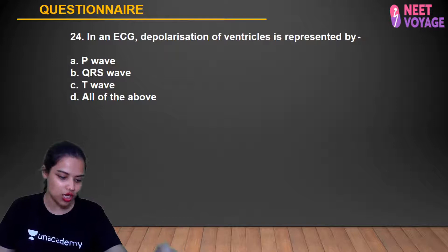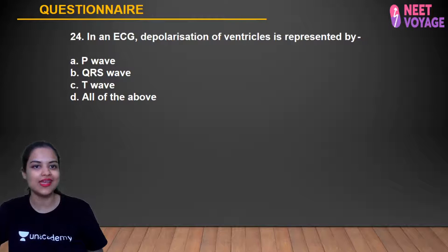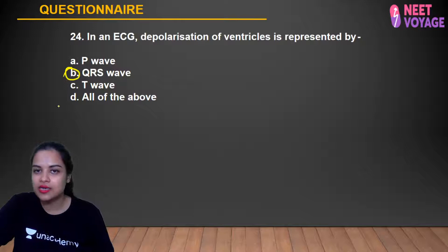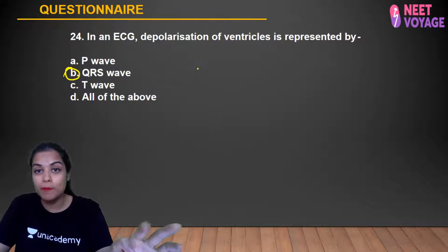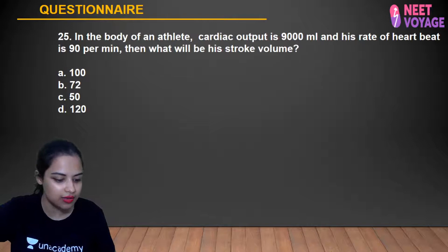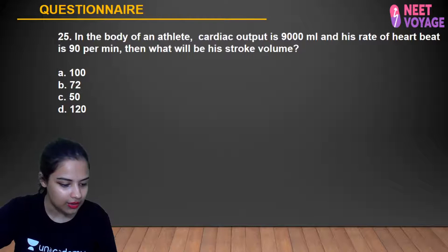Question 24: In an ECG, depolarization of ventricles is represented by what? The QRS complex (QRS wave) represents depolarization of ventricles — i.e., systole of the ventricles. All three waves Q, R, and S together represent ventricular depolarization. B is the right answer. Tanusha, Samreen, Anusha, Anshika, Simran, and Shashank gave the correct answer.